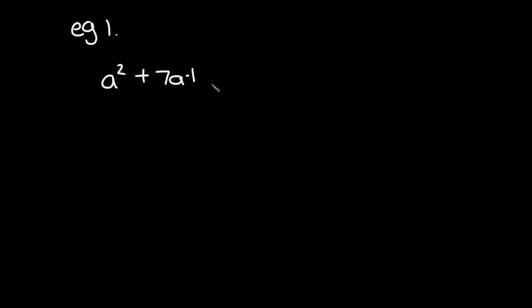For example, if we're given a² + 7a + 10, we can see straight away the last term is positive, so we know it's a type one trinomial. That means both brackets carry the same sign as the middle term. Here the middle term is positive, so both brackets will carry a positive sign. If the middle term were negative, both brackets would carry a negative sign.